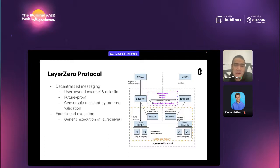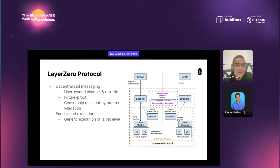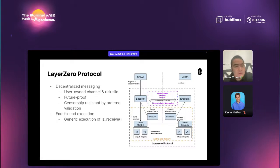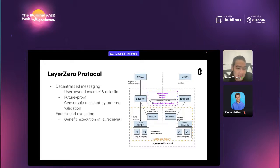LayerZero only moves the bytes — the message you send from one side to the other side — and we won't add any context, such as which chain it's from or where it is going, into the payload. We're just moving bytes. And the users can flexibly define how they want to move the information using these bytes. If you encode a DeFi token transfer into bytes, then it will be a token app. That's how it works. And the second tenet is end-to-end execution.